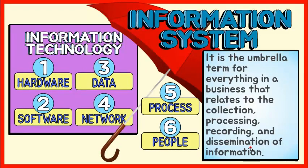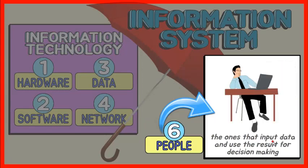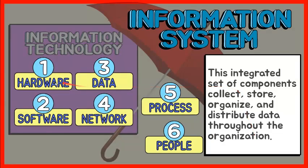A process is a series of steps undertaken to achieve a desired outcome or goal. Information systems are becoming more and more integrated with organizational processes, bringing more productivity and better control to those processes. People are the ones that input data and use the result for decision making. Examples are the frontline help desk workers, systems analysts, programmers, and the chief information officer. This integrated set of components collects, stores, organizes, and distributes data throughout the organization.